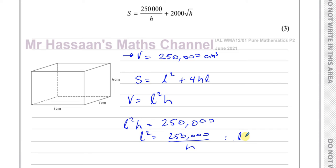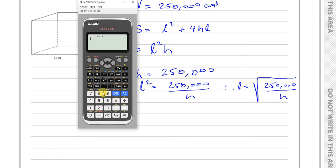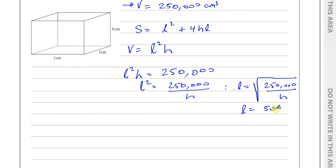Therefore L is equal to the square root of 250,000 over H. The square root of 250,000 is 500, since 500 times 500 gives 250,000. So L equals 500 over the square root of H.